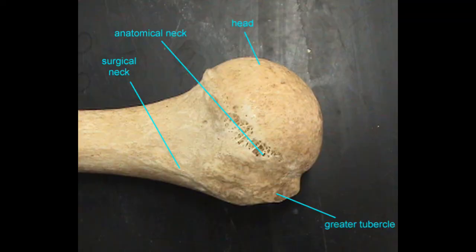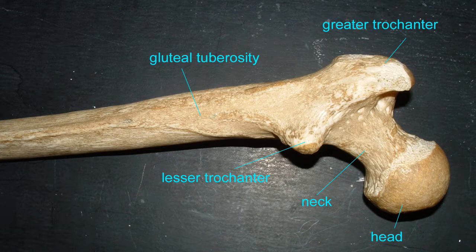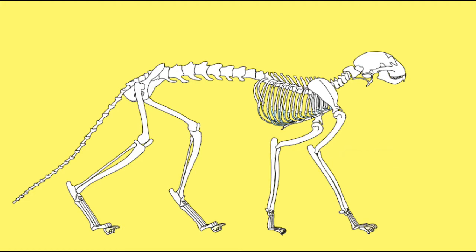An image could be labeled that this is, say, the proximal end of the humerus, or that the surgical neck of the humerus is distal to the anatomical neck. One could say that this is an image of the proximal end of the femur, or that the gluteal tuberosity is distal to the trochanters, and the trochanters are distal to the neck.